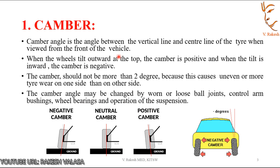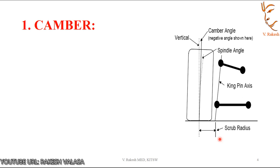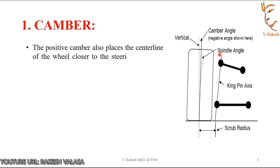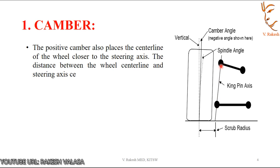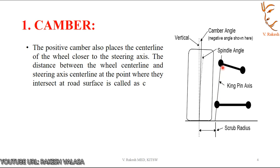You can observe the camber angle in this animated figure. This is the negative camber, this is zero camber, and this is the positive camber. The positive camber or negative camber also places the center line of the wheel closer to the steering axis. The steering axis is the line drawn through the two ball joints. The distance between the wheel center line and the steering axis where they intersect at the road surface is called camber offset or scrub radius.